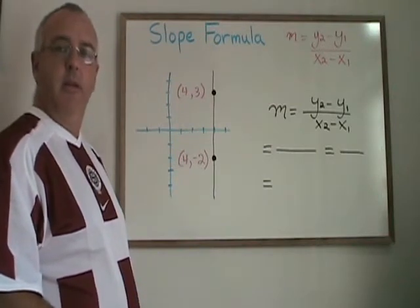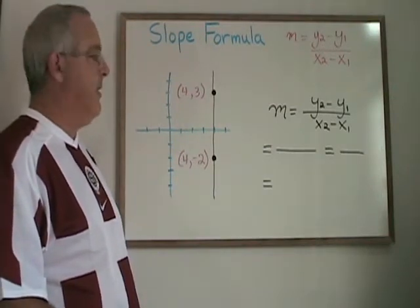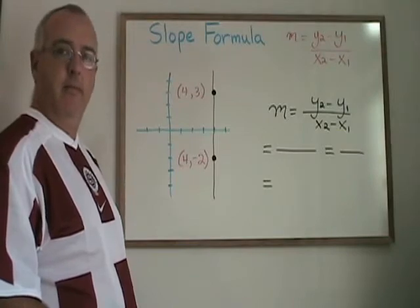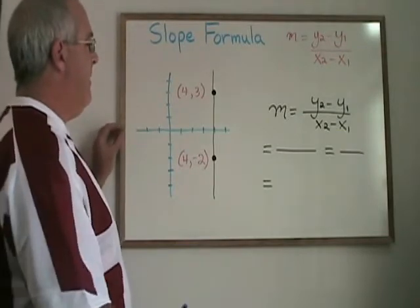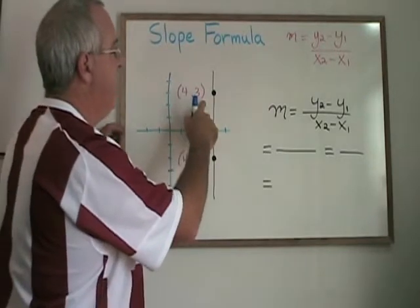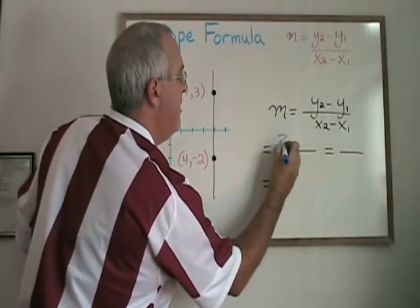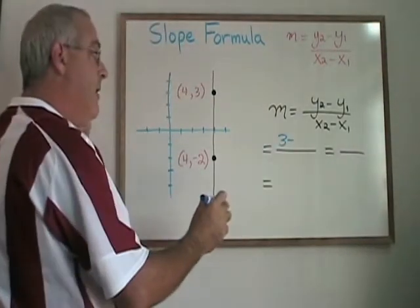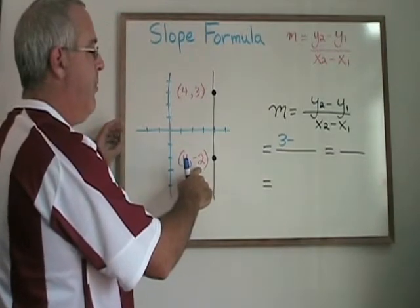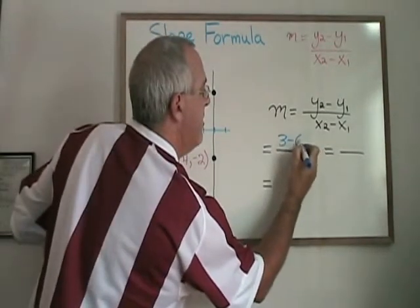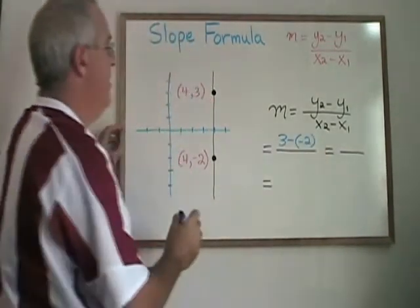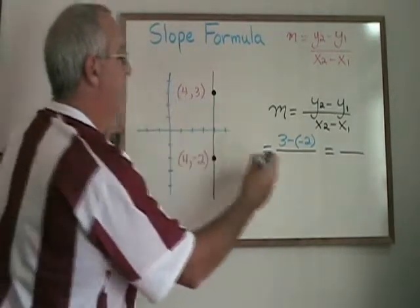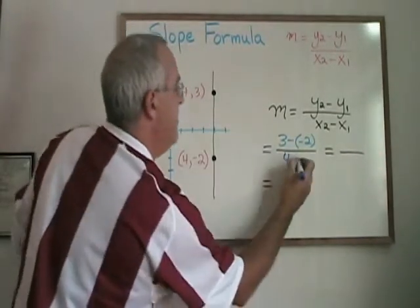What happens with the slope formula if we're dealing with a vertical line like this one? If I call this point 2, then my y2 is equal to 3. This is point 1 then and my y1 is equal to negative 2. x2 becomes 4 and x1 becomes 4.